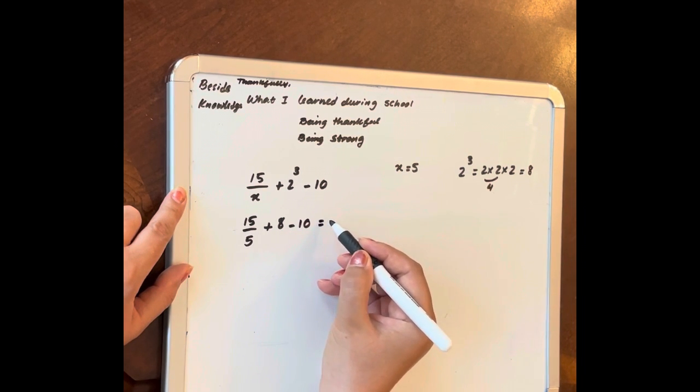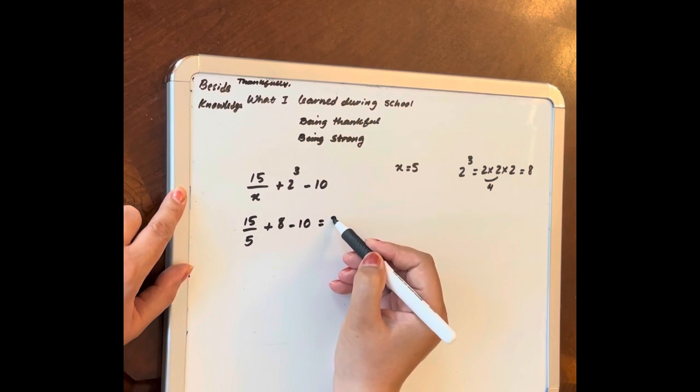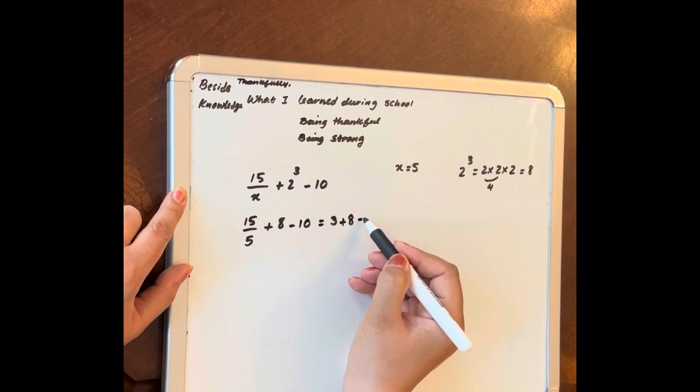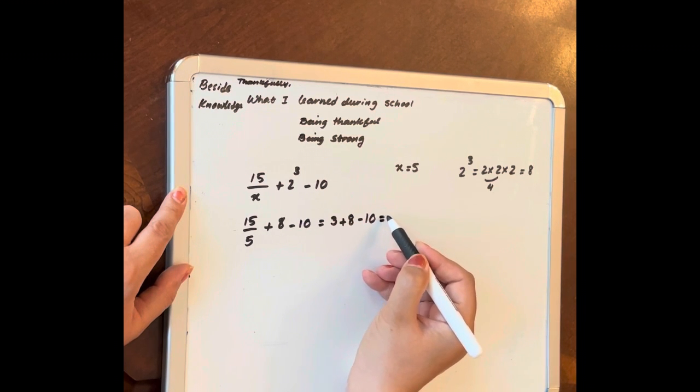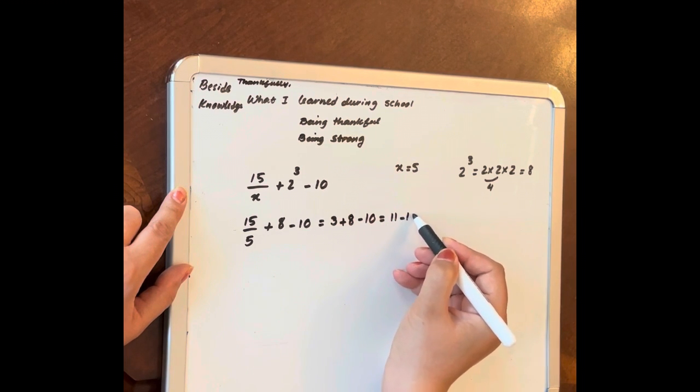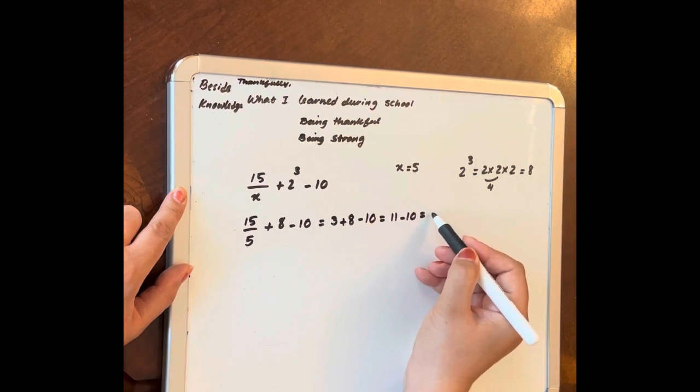So 15 divided by 5 is 3 plus 8 minus 10 is equal to 3 plus 8, 11 minus 10 is equal to 1.